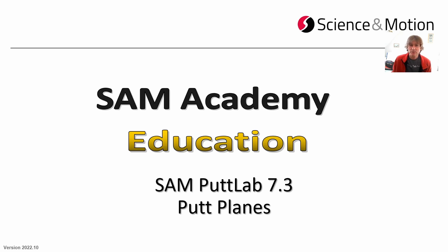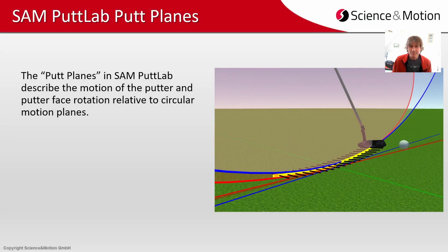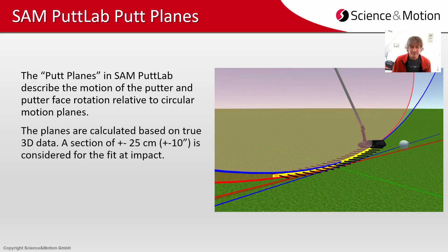In this video I will talk about putt planes. The putt planes in SAM PuttLab describe the motion of the putter and putter face rotation relative to circular motion planes. The planes are calculated based on true 3D data as captured by SAM PuttLab and a section of plus or minus 25 centimeters or plus or minus 10 inches is considered to calculate the best fit of this data into a circular plane.